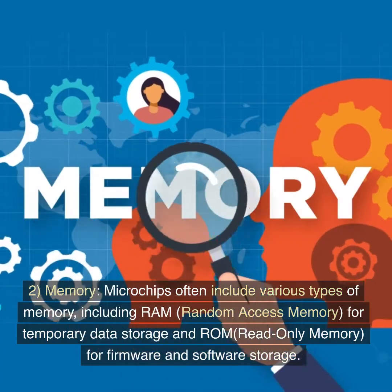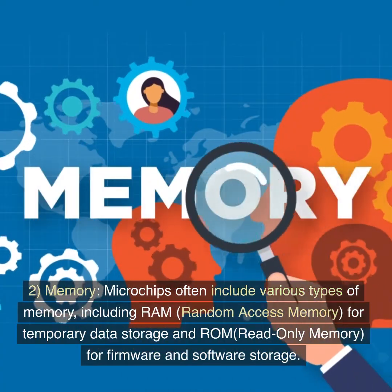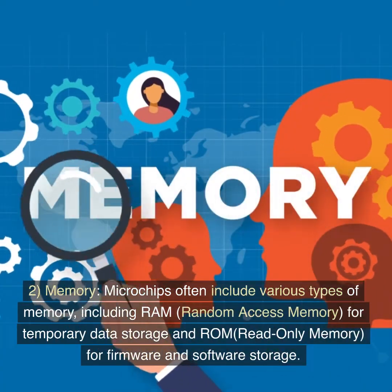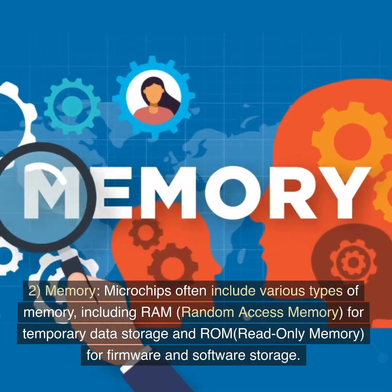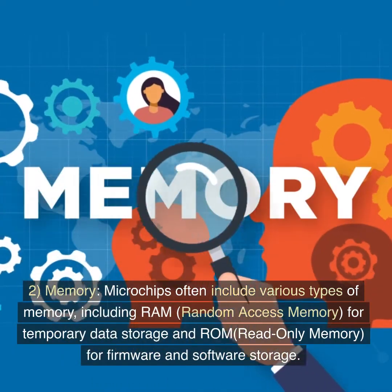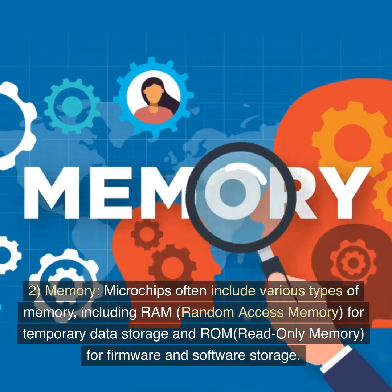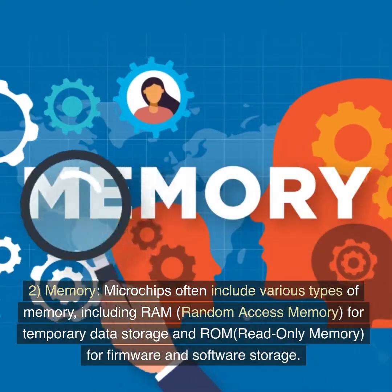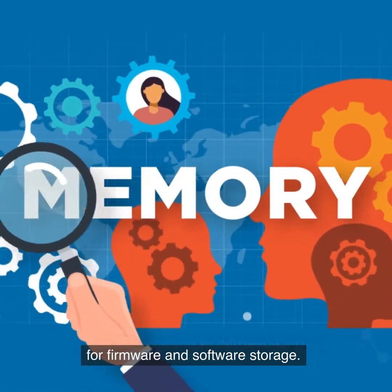2. Memory. Microchips often include various types of memory, including RAM (random access memory) for temporary data storage and ROM (read-only memory) for firmware and software storage.